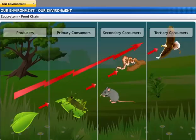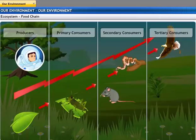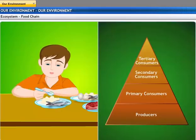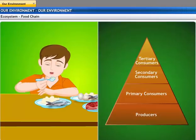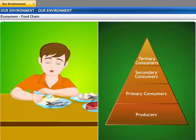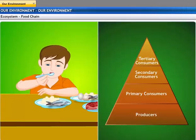Did you know that a huge amount of energy is lost at each stage in the food chain? Why do we eat? To get energy. The food you eat acts as fuel and provides energy for work. This energy is passed on to the various trophic levels, right from the producers to the tertiary consumers.